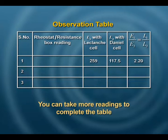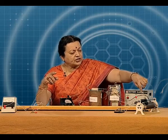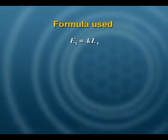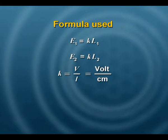One reading is never sufficient. There are two ways of taking multiple readings: you can change the potential difference across the potentiometer wire by changing the rheostat, or you can use a resistance box and choose different values for multiple readings. The formula is E1 = k × L1 and E2 = k × L2, where k is the potential drop per unit length in volts per centimeter. The ratio therefore becomes simply L1 to L2.